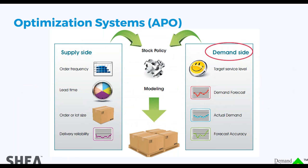There are also optimization modules — the APO module is SAP's. Syspro has inventory optimization modules, and there are lots of modules that try to optimize supply chain. They do it traditional ways: forecast accuracy over time, 95% confidence level, exponential smoothing, and then a system that kicks out orders for you. That is another tool that has existed in the industry.